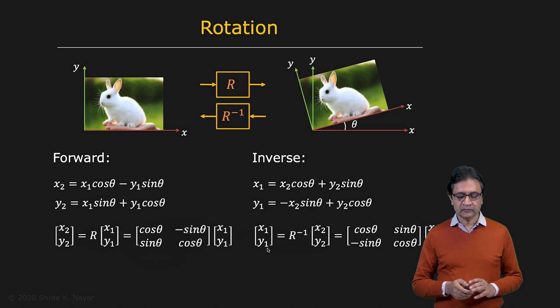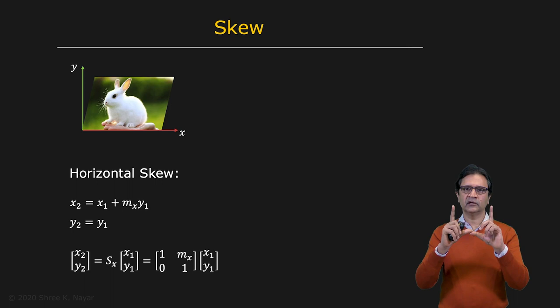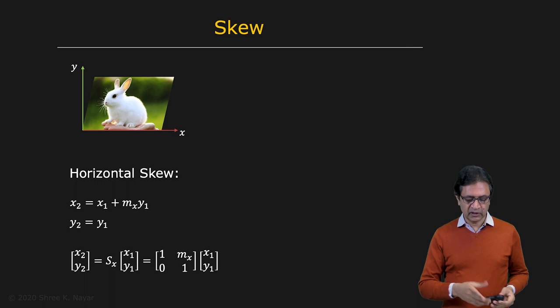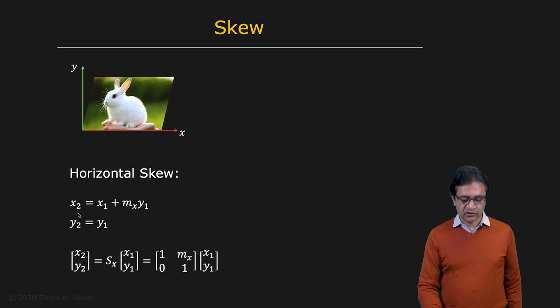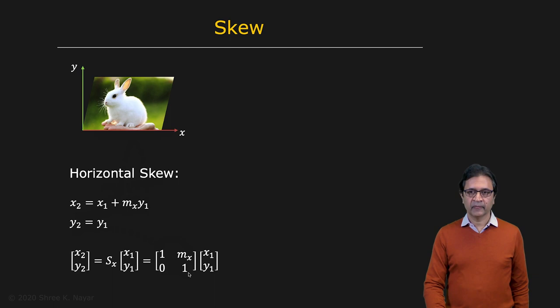And you can do other things such as skewing. Skewing essentially takes a rectangular image and it turns it into a parallelogram. And you can skew in any direction. Let's talk about horizontal skewing. In the case of horizontal skewing, you have X2 equal to X1 plus some M times Y1. So the skewing happens in this direction. And Y2 is just Y1. So that can be written as 1, MX, 0, 1.